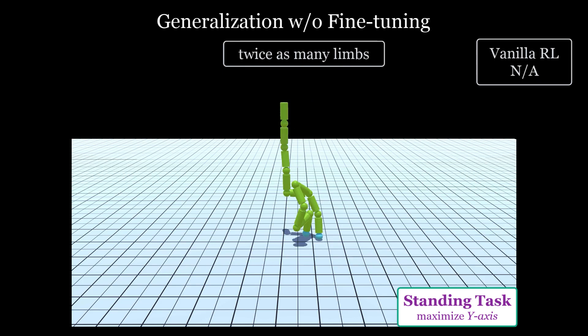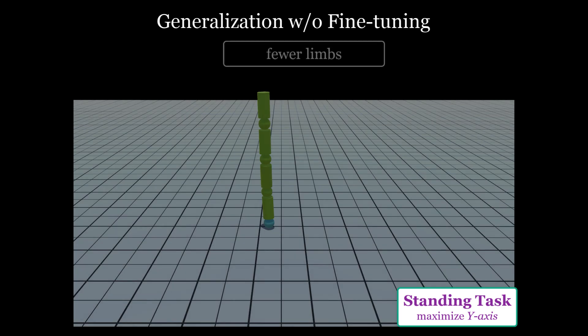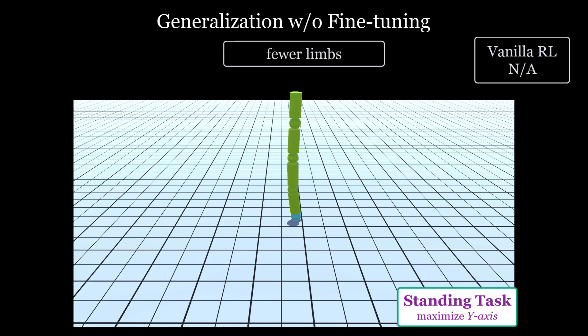Note that vanilla RL is not applicable here without retraining, because we have a new morphology. With four limbs, the task is easier, so it generalizes pretty much perfectly.